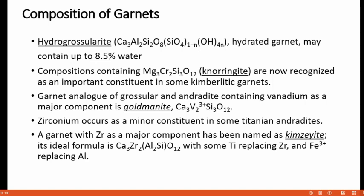A garnet analog of grossular and andradite containing vanadium as a major component in its octahedral site is termed goldmanite, with a chemical composition of Ca3V2Si3O12. Zirconium occurs as a minor constituent in some titanium andradites. A garnet with zirconium as a major component has been named kimzeyite, with an ideal formula of Ca3Zr2Al2SiO12, with aluminium and silica in its tetrahedral position, and some titanium may replace zirconium while iron may replace aluminium.